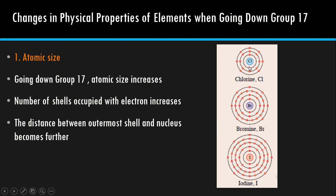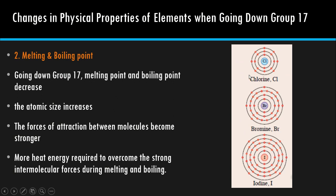Melting and boiling point — when going down the group, the melting and boiling point increases. Because the atomic size going down the group is increases, so the force of attraction between molecules become stronger. More heat energy required to overcome the strong intermolecular forces. This is terbalik dengan Group 1 — Group 1 decreases disebabkan metallic bonding, tapi untuk Group 17, intermolecular force, bila size semakin besar, force of attraction makin kuat.